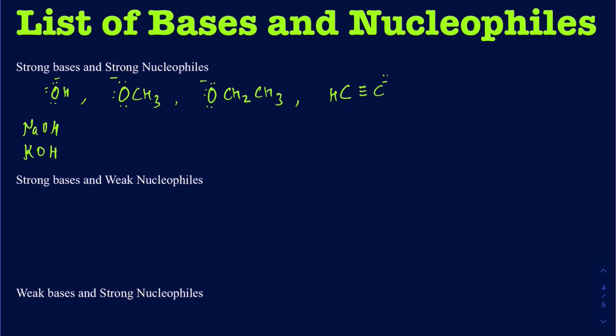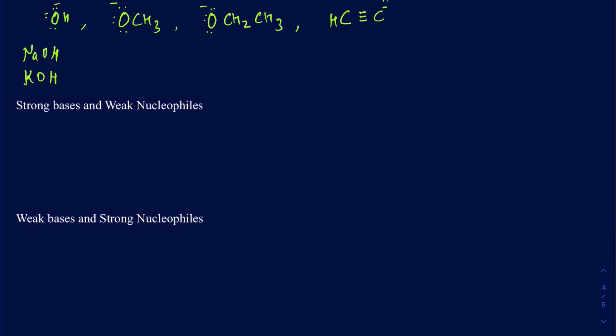Those are some of the most common strong base/strong nucleophile examples you're going to see in organic chemistry. Now let's talk about some strong bases that are actually going to be weak nucleophiles. The first example is NaH, or another way of saying it, hydride — H⁻. This H⁻ could be coming from NaH, KH, or even LiH. This hydride doesn't really like to act as a nucleophile — it's going to be acting mostly like a base.